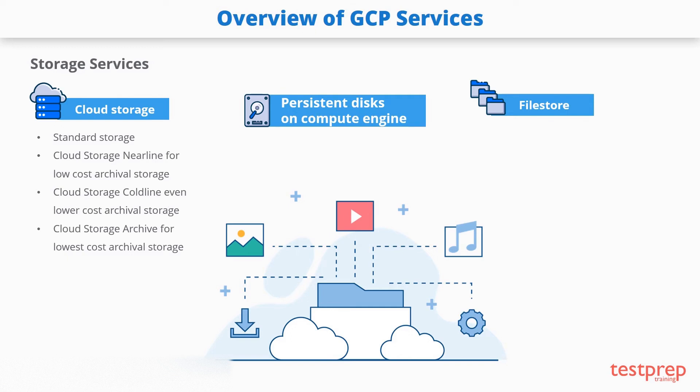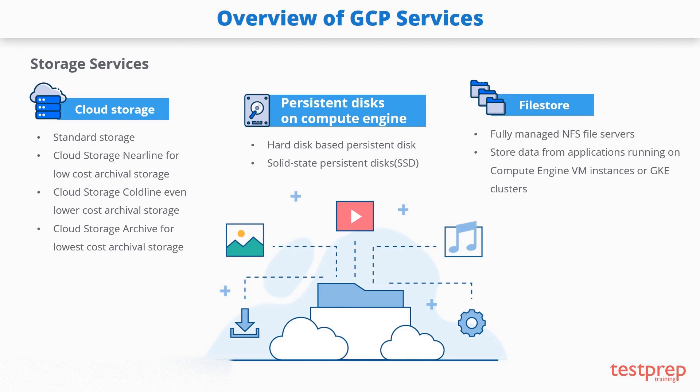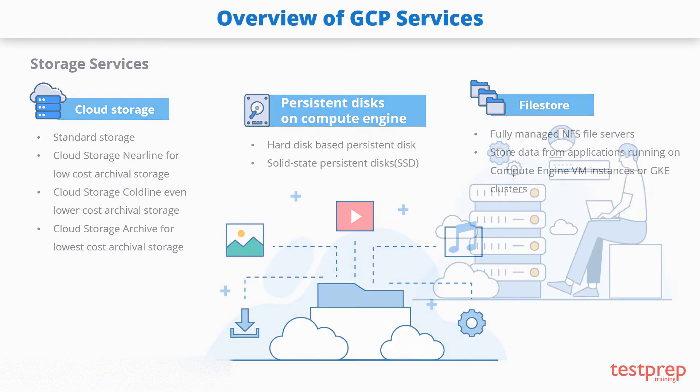With Cloud Storage Archive you get the lowest-cost archival storage, ideal for backup and disaster recovery or for data you intend to access less than once a year. Persistent disks on Compute Engine serve as primary storage for your instances; Compute Engine offers both hard disk-based standard persistent disks and solid-state persistent disks. In Filestore, you can get fully managed NFS file servers and use Filestore instances to store data from applications running on Compute Engine instances or GKE clusters.